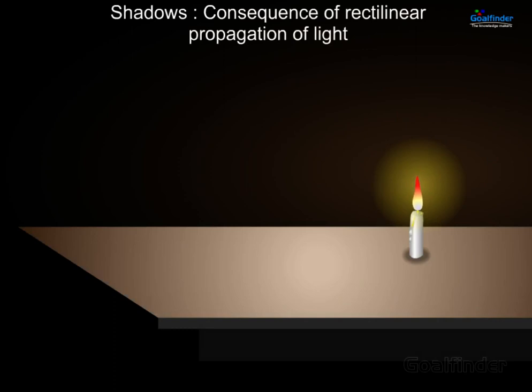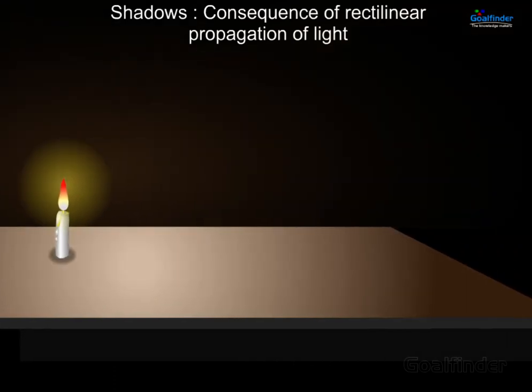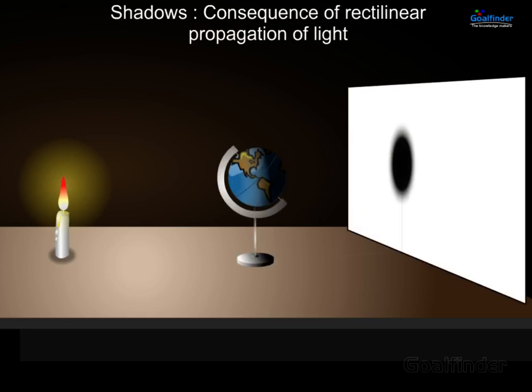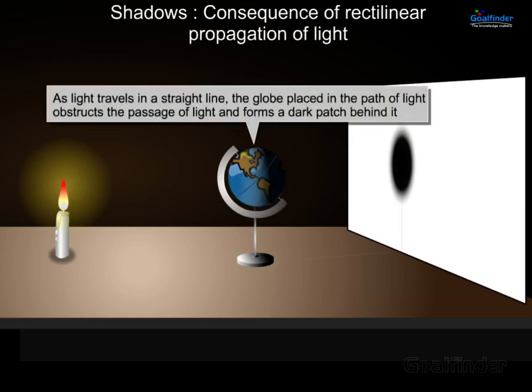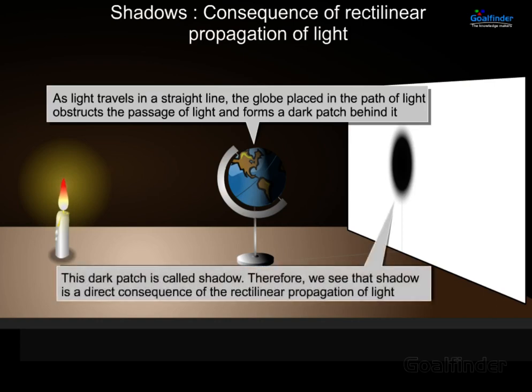Shadows are a consequence of rectilinear propagation of light. As light travels in a straight line, the globe placed in the path of light obstructs the passage of light and forms a dark patch behind it. This dark patch is called a shadow. Therefore, shadow is a direct consequence of the rectilinear propagation of light.